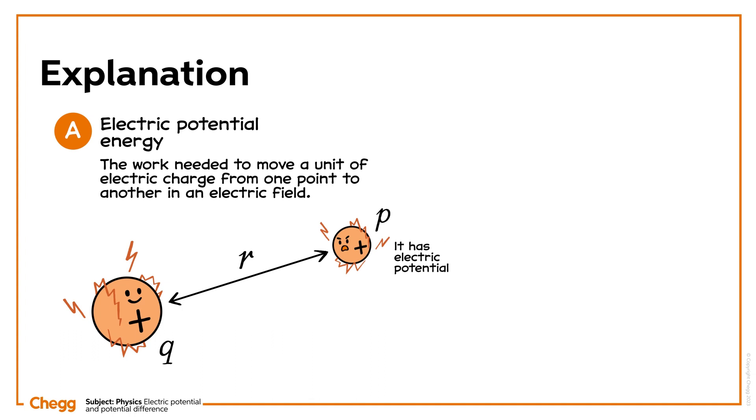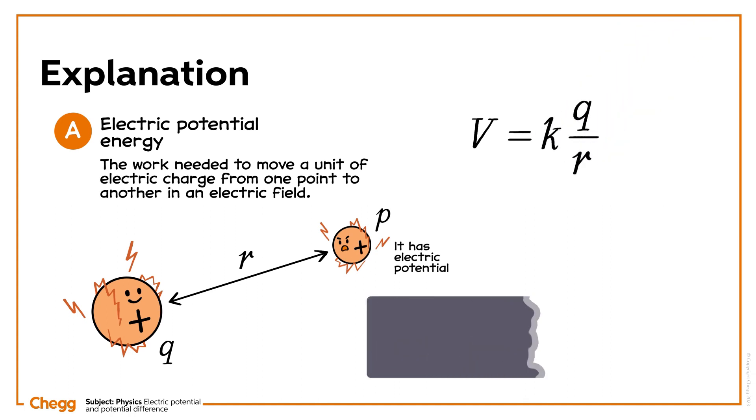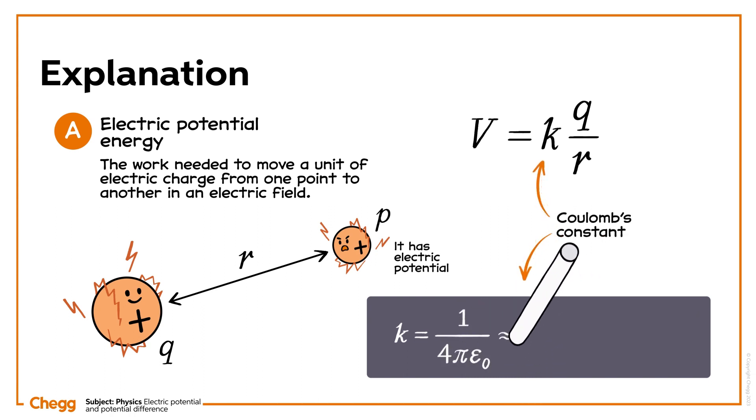And the value of the charge q in coulombs. v equals the product of k and q over r. Here, k is fixed. It represents Coulomb's constant, which is around 9 times 10 to the 9th newton meters squared per coulomb squared.